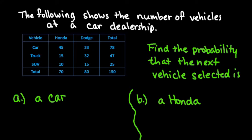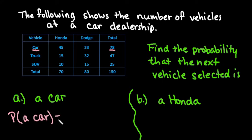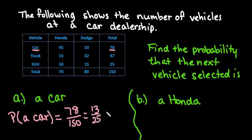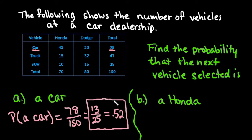We're going to assume probabilities remain constant and select the next vehicle. First, we find the probability that the next vehicle selected is a car. We look for the total number of cars, which is 78, so the probability is 78 out of 150. These are known as the margins — this is a marginal probability. That reduces to 13 out of 25, or 0.52 as a decimal. Any form of writing this is acceptable.